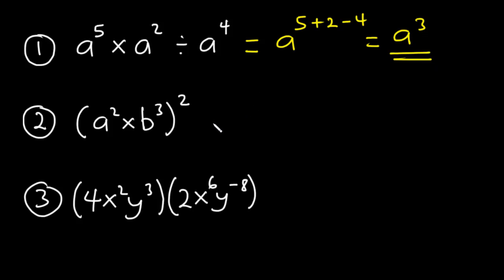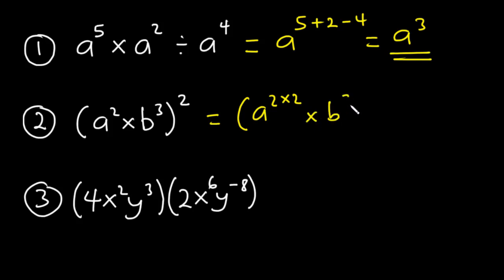In the second example, we have a exponent 2 times b exponent 3, all in a bracket, squared. We need to distribute the exponent across. So it's going to be a exponent 2 times 2, times b exponent 3 times 2. That gives a exponent 4 times b exponent 6.